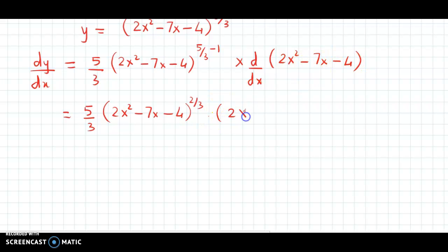It will be 2 times 2x, which is 4x. x squared derivative is 2x. Minus 7 times x derivative is 1, which is minus 7. 4 is a constant, so its derivative is 0.